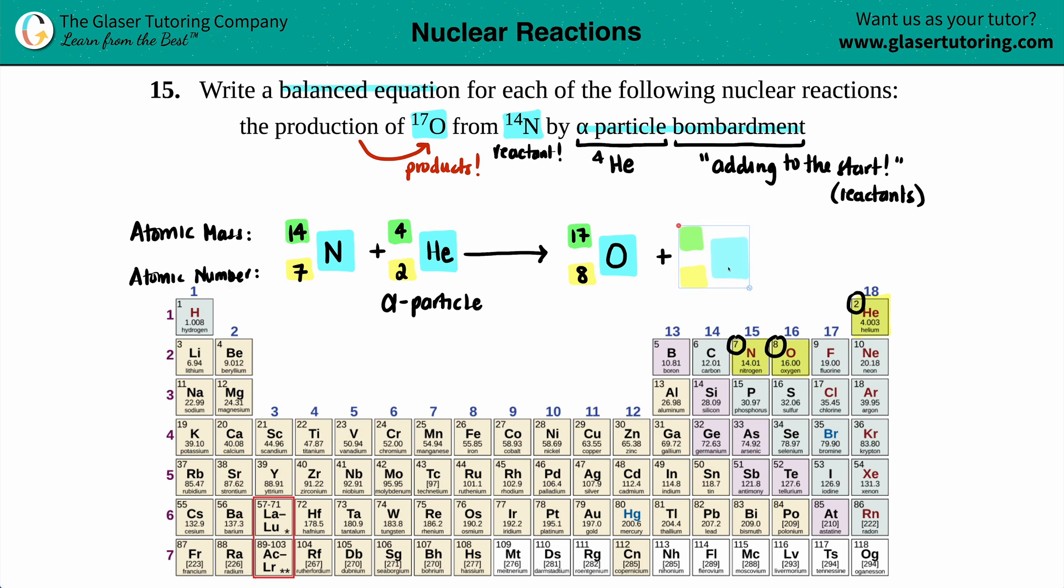Let's do the top numbers now. The top would be 14 plus 4 equals 17 plus some x value. That's who you're trying to solve for. If we simplify this, 18 equals 17 plus x. We can do the math - x has to equal 1. So I know that a 1 has to go on this top side.